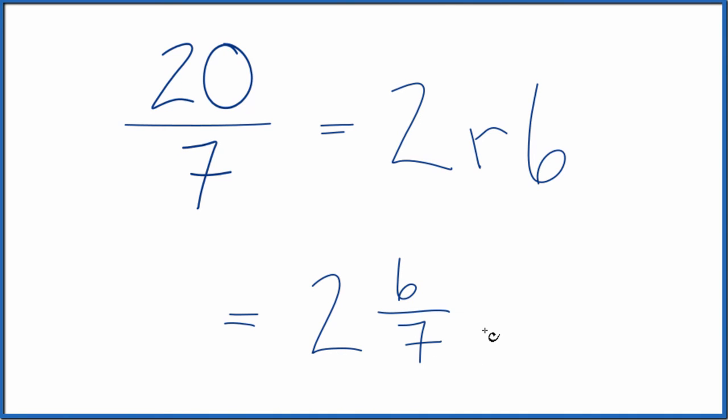So real quick, one more time. We divided 20 by 7, we know that 2 times 7 is 14, with a remainder of 6. So we have 2 as our whole number here, and then we take the remainder, 6, over the original denominator.